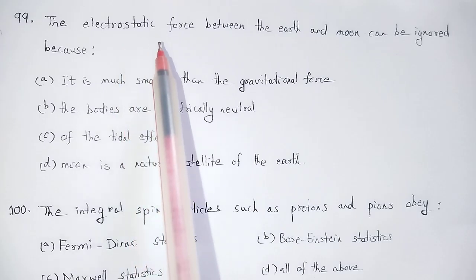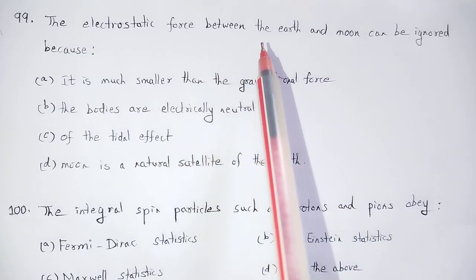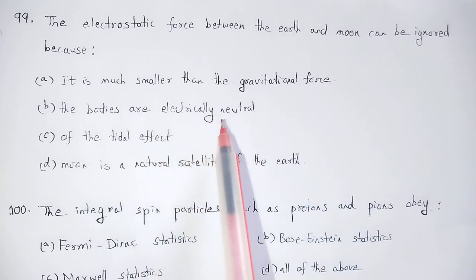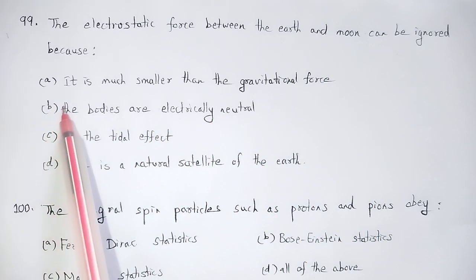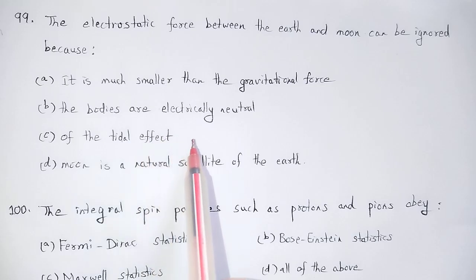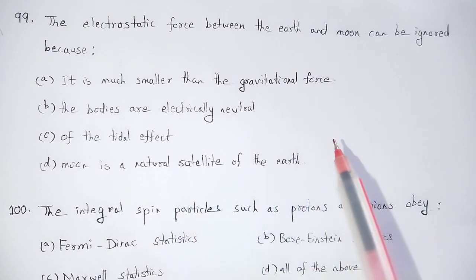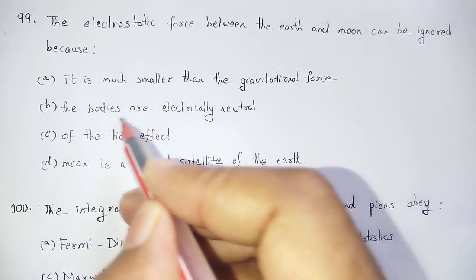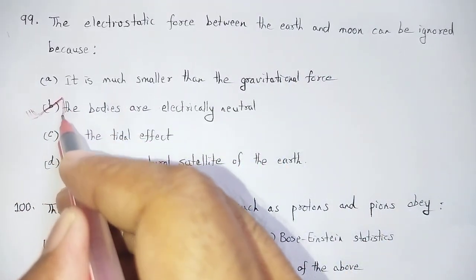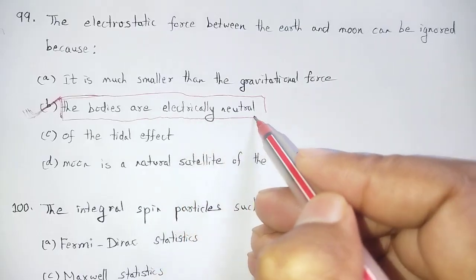Question number 99: The electrostatic force between the Earth and Moon can be ignored because the bodies are electrically neutral. Since the Earth and Moon are electrically neutral, the different concentration forces cancel out, and the electrostatic force is much smaller than the gravitational force, so it will be neglected. The Moon is a natural satellite of the Earth.